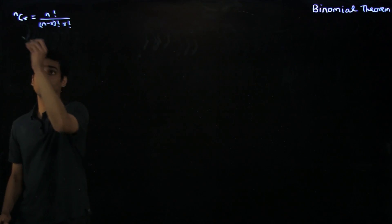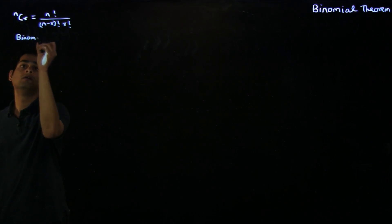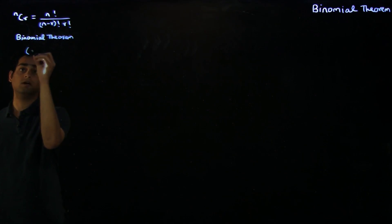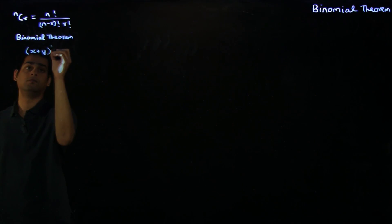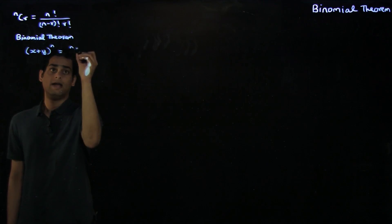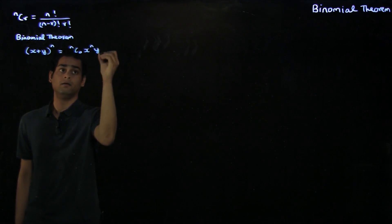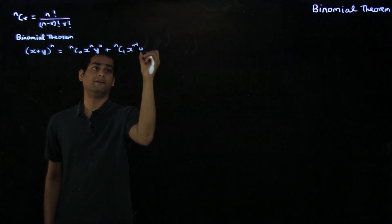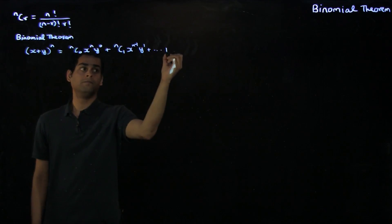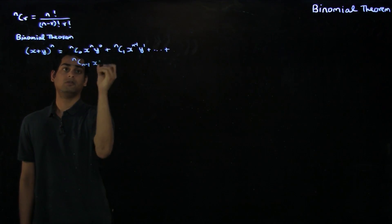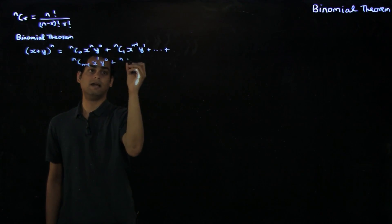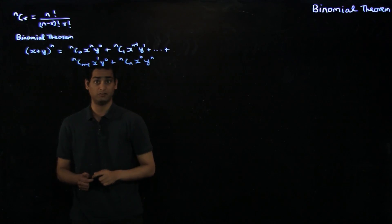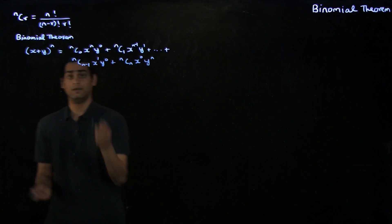So the binomial theorem is given by this result: x plus y raised to the n is nc0 times x to the n times y to the 0, plus nc1 times x to the n minus 1 times y to the 1, plus so on, till ncn minus 1 times x to the 1 times y to the n, plus ncn times x to the 0 times y to the n, where nCr is the number of ways of choosing r objects from n distinct objects.